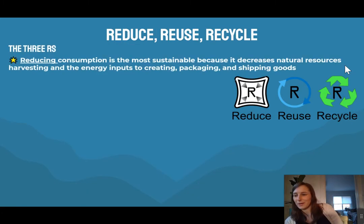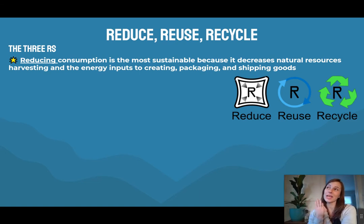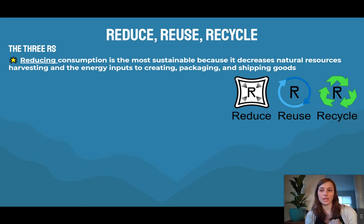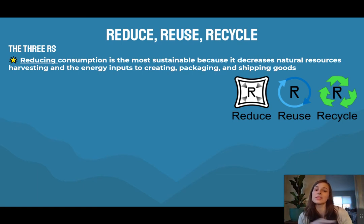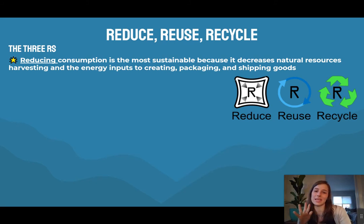The first thing we're going to talk about is the three R's — reduce, reuse, and recycle. They're in order of the best approach. Reducing means reducing your consumption, and this is the most sustainable option because it decreases natural resources harvested and the energy inputs needed to create, package, and ship all of these goods.